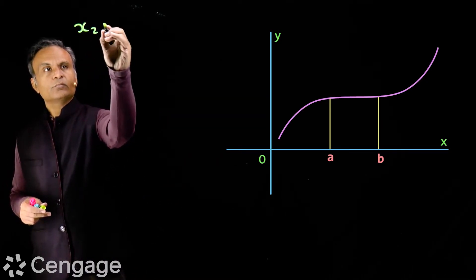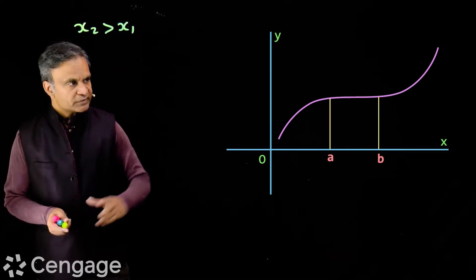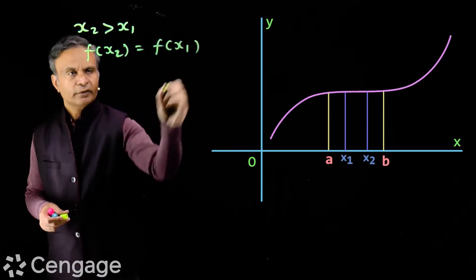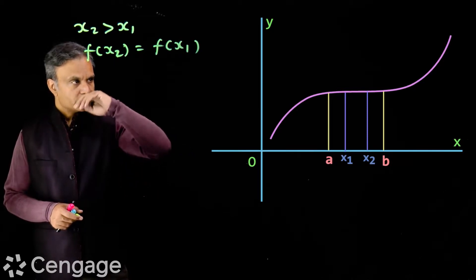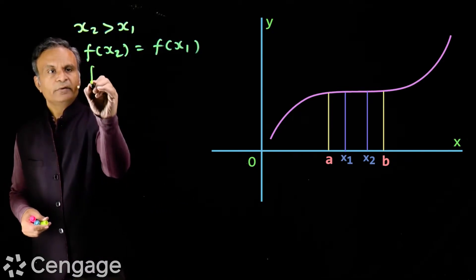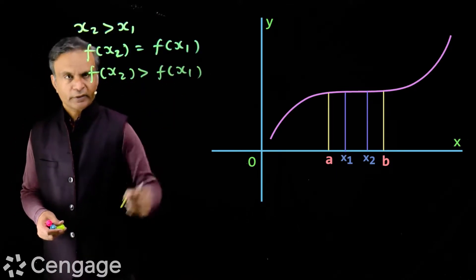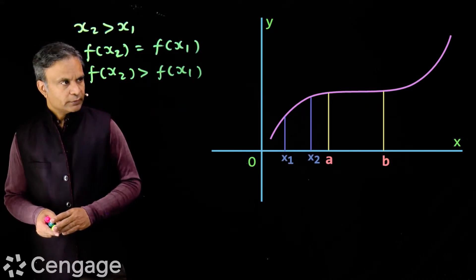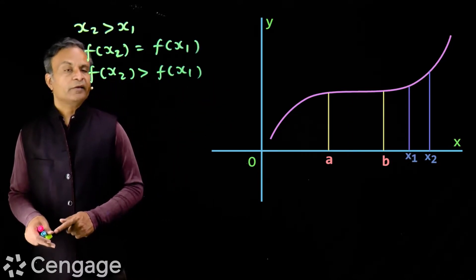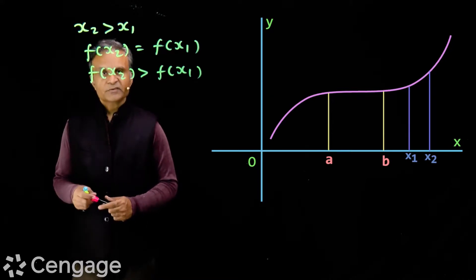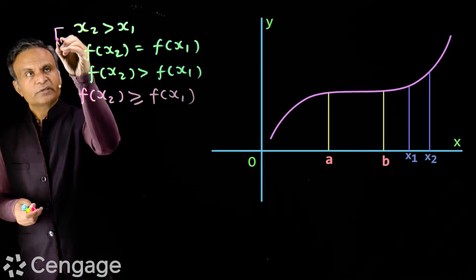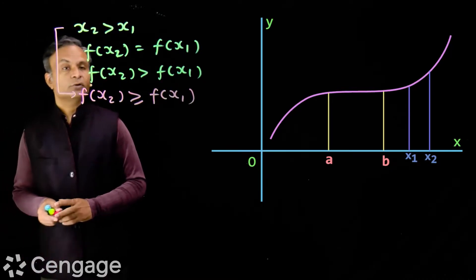If we place x1 and x2 between a and b we will have f(x2) equal to f(x1). In all other cases where x2 is more than x1, we will have f(x2) greater than f(x1). So overall, we have f(x2) greater than or equal to f(x1) whenever x2 is more than x1.